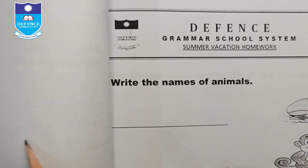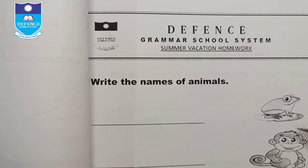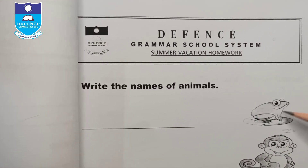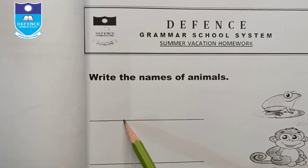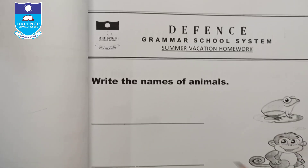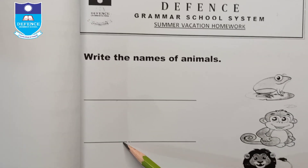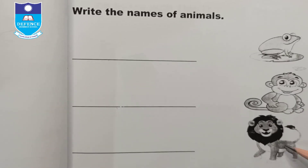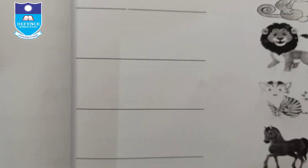Write the names of animals. Some animals are shown — the first one is 'frog', write 'frog' there. Similarly, write 'monkey'. Also write the names of lion, cat, and horse.